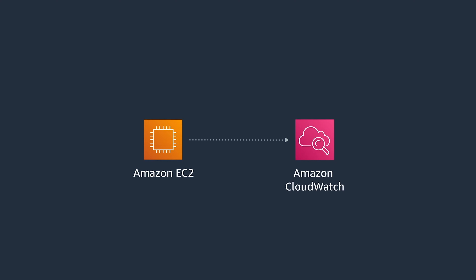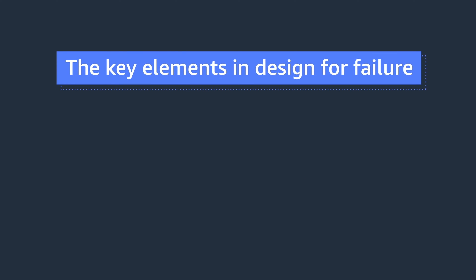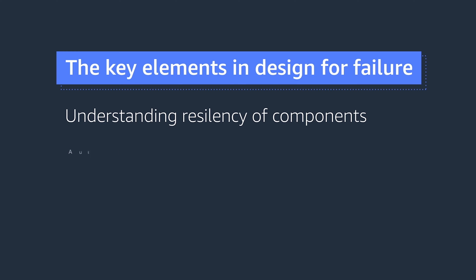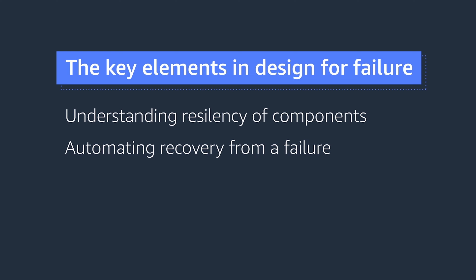We've got a lot to get through, so let's dive in. When you launch your application on EC2, AWS starts collecting lots of metrics in CloudWatch. Using these services together makes it really easy to programmatically increase the reliability. Designing for failure requires you to consider a number of key elements: first, understanding resiliency of components; second, automating recovery from a failure; next, scaling to meet demand; and finally, testing.